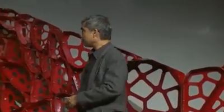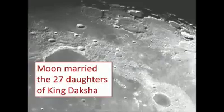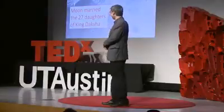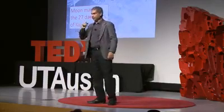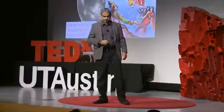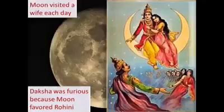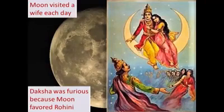I'd like to take you to a very magical time in India, when the moon married the 27 daughters of King Daksha. If you're the moon and you lived in those times, you could get away with polygamy. The story goes that each day, the moon would visit one of his wives. However, his father-in-law, King Daksha, got word that the moon favors one of his wives called Rohini much more than the other wives, and he was furious with his son-in-law.